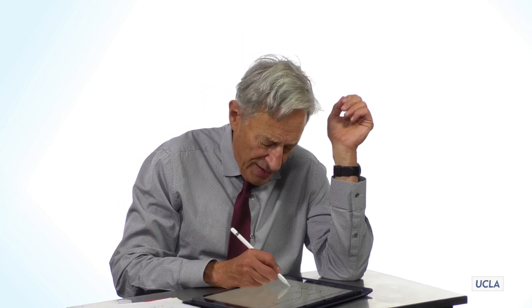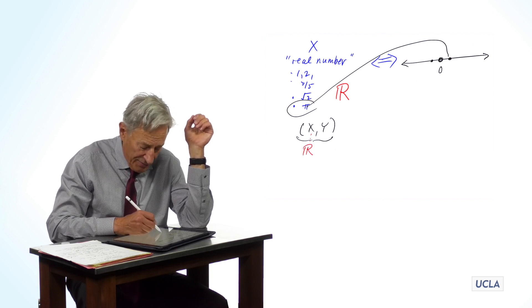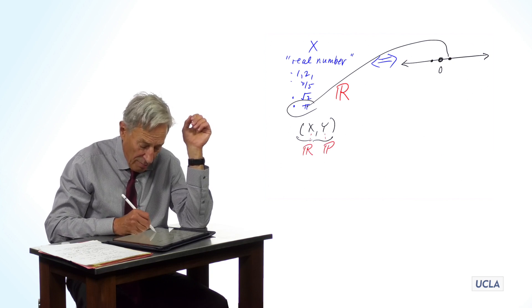So, if the real numbers represent one dimension, what represents two dimensions? Well, you have to have an x from R, and you have to have a y from R.